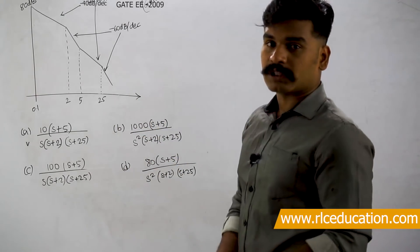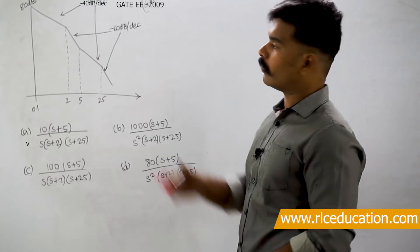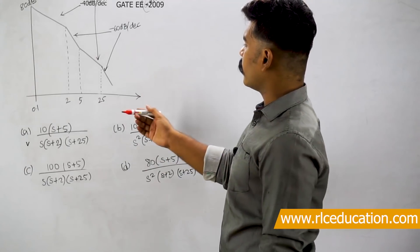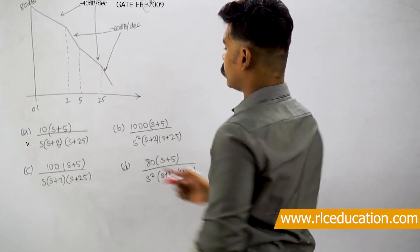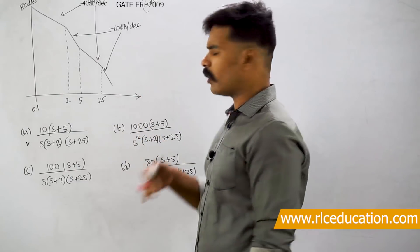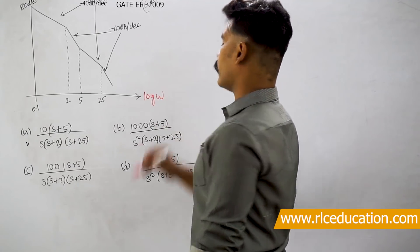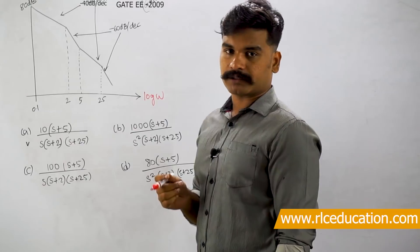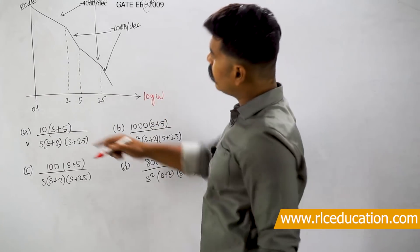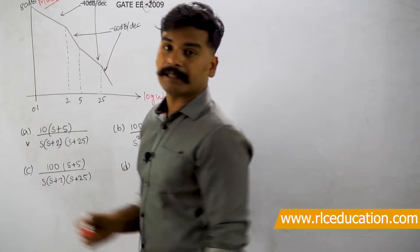Now we will try to solve this GATE question — finding the transfer function from a given Bode plot. The plot given is a Bode magnitude plot. In a Bode magnitude plot, the x-axis represents log omega plotted on a semi-logarithmic sheet, and the y-axis represents the magnitude of the transfer function in decibels. The Bode magnitude plot basically has two regions: the low frequency region closer to the y-axis, and the high frequency region.